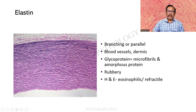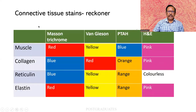Elastin may be branching or parallel, but there are very delicate fibrils which cannot be seen by H&E. They are found in blood vessels and in the dermis. The glycoprotein constitutes the microfibrils as well as the amorphous protein. Normally they are rubbery in consistency — that is why they have the property of recoiling. Under H&E, they appear eosinophilic and refractile. These are the ready reckoners for the connective tissue stains.